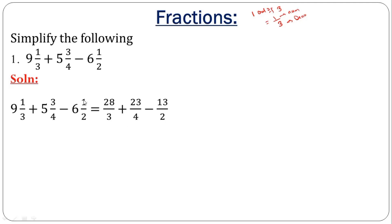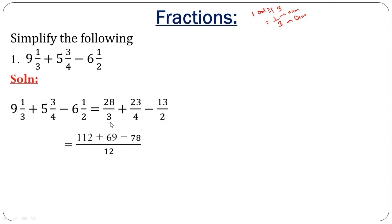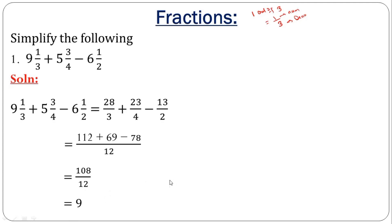We have 13 over 2. Then 3 into 12 is 4; 4 times 28 is 112. 4 into 12 is 3; 3 times gives 9. 6 times 13 is 78. After this simplification you get 108 over 12, which gives you 9. That's how to simplify for addition and subtraction — you look for the LCM.